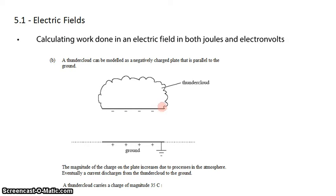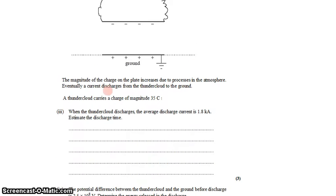The bottom of the thundercloud is parallel to the ground, negatively charged while the ground is positively charged. The magnitude of the charge increases due to atmospheric processes. Eventually current discharges from the thundercloud to the ground - that's lightning. At this particular moment the thundercloud carries a charge of 35 coulombs.